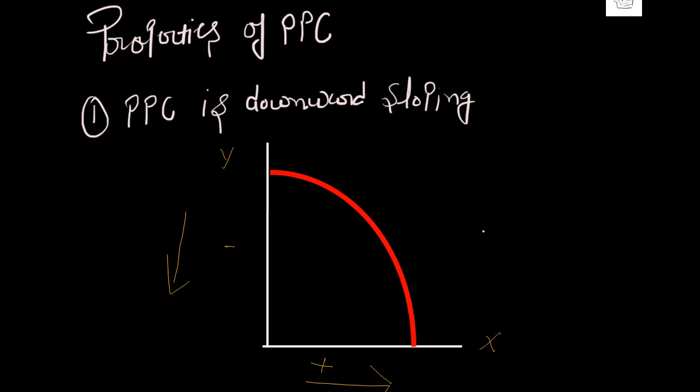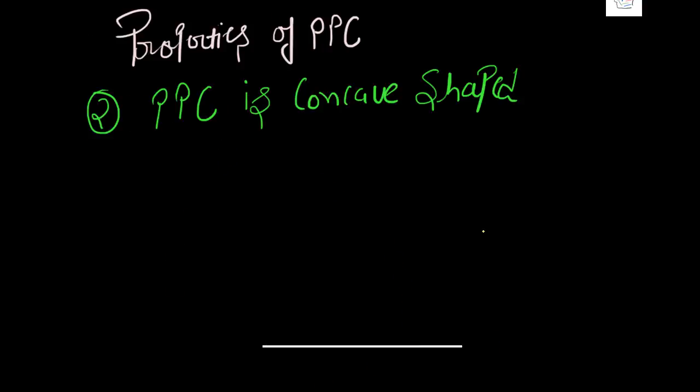So that is the reason why PPC slopes downwards. Please try and understand that we are not telling you the reason why PPC is a concave shaped curve - that is a different question altogether. We are simply trying to understand why PPC is sloping down, which is simple. It's a negative relationship. Every single time X is to increase, Y has to decrease.